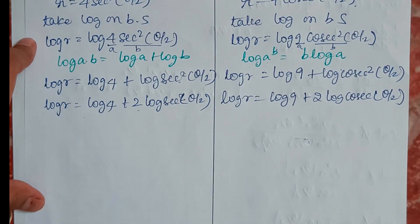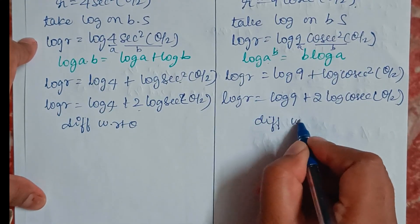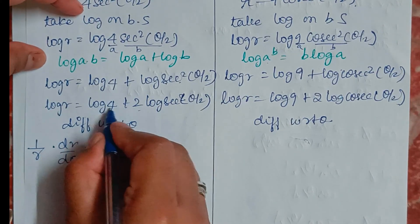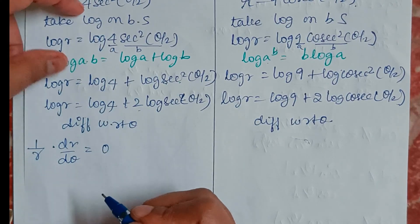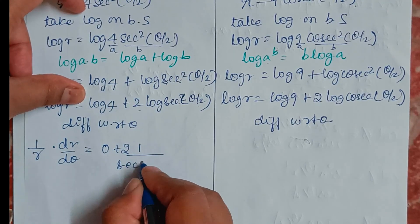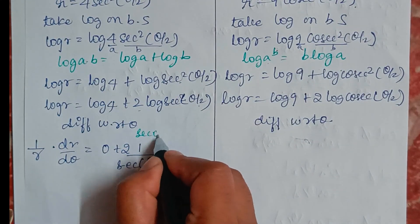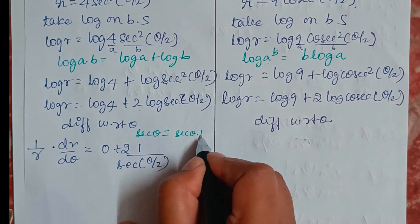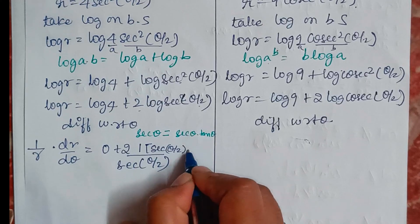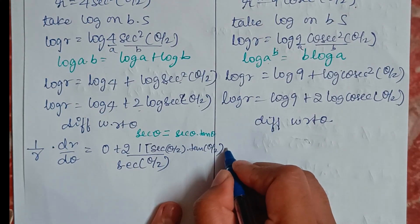After expanding, we differentiate with respect to θ. For the first curve: (1/R)·(dR/dθ) = 0 + 2·(1/sec(θ/2))·sec(θ/2)·tan(θ/2)·(1/2), since the differentiation of sec θ is sec θ·tan θ, and the differentiation of θ/2 gives 1/2.